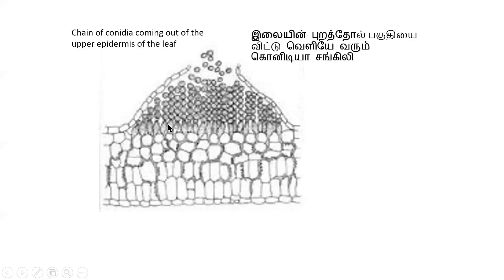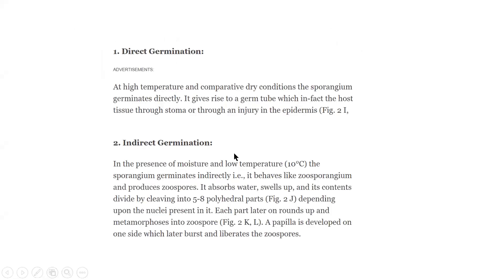This is the asexual conidiospores diagram. Albugo-candida is an asexual reproductive structure. What happens after the conidiospores fall into a suitable substratum at high temperature and dry condition?